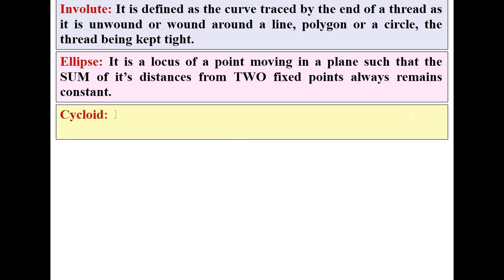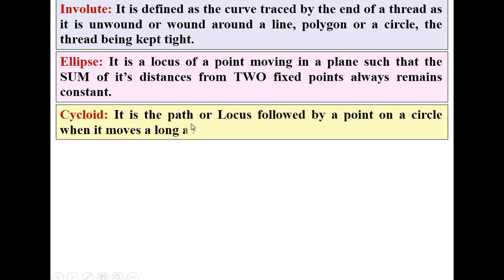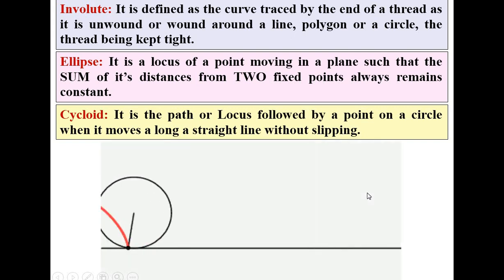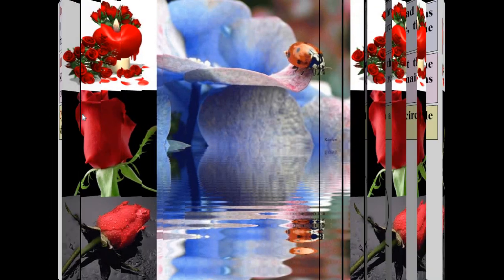Now next is the definition for cycloid. It is a path or the locus followed by a point on a circle when it moves along a straight line without slipping. You can understand from this figure, this is the straight line written over here, along the straight line. And it is a path or locus followed by a point. So here you can see, this black is the point on a circle. So this black point is on the circle. So I think you can understand the definition of involute, ellipse and cycloid. So thanks my dear friends.